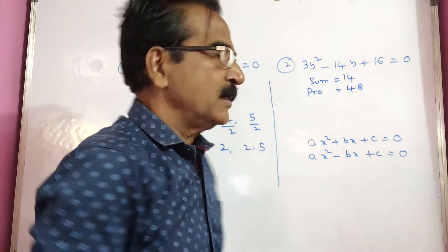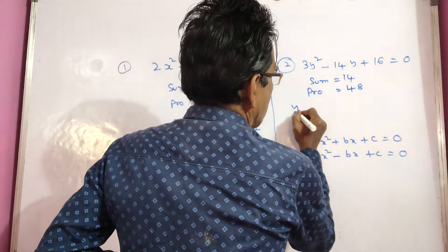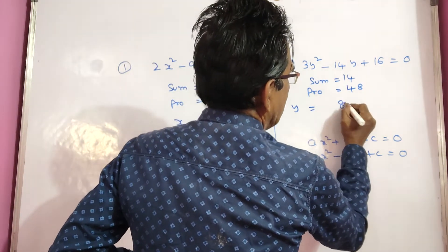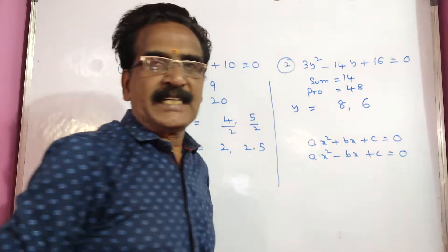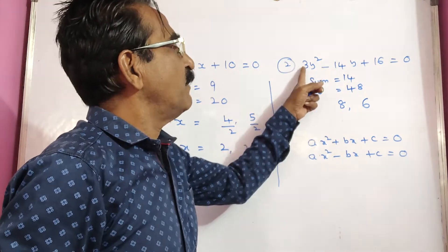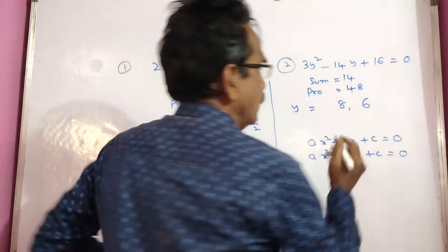So 8, 6s are 14. So the numerical values of y are 8, 6. Now divide by 3.